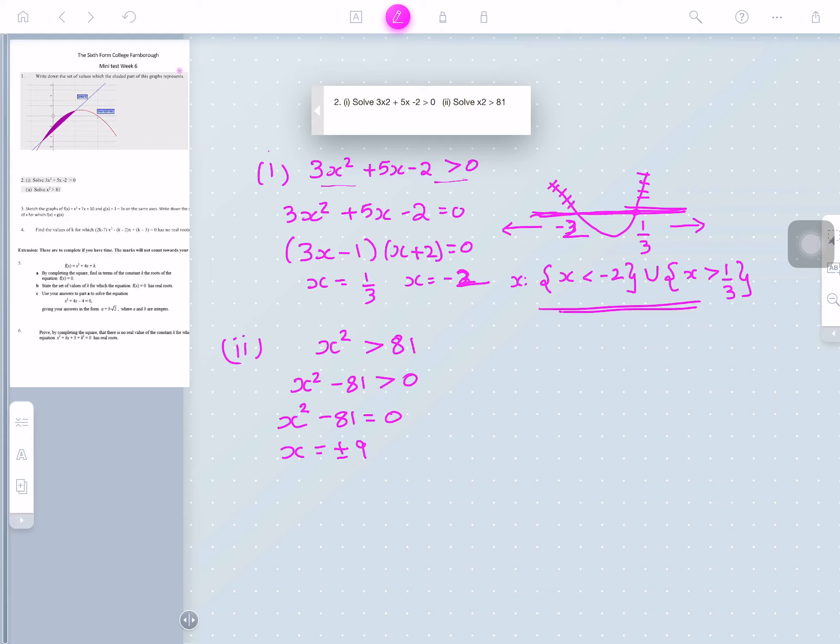And then once you've got the critical values, that's minus 9 and plus 9. And again, we want it greater than 0. So we want that bit.